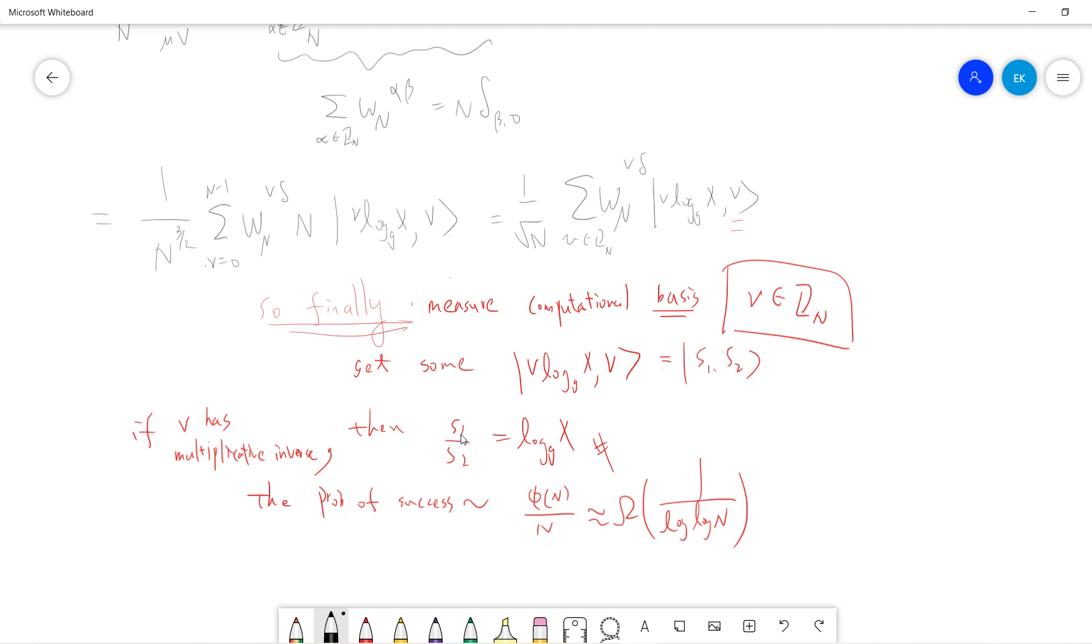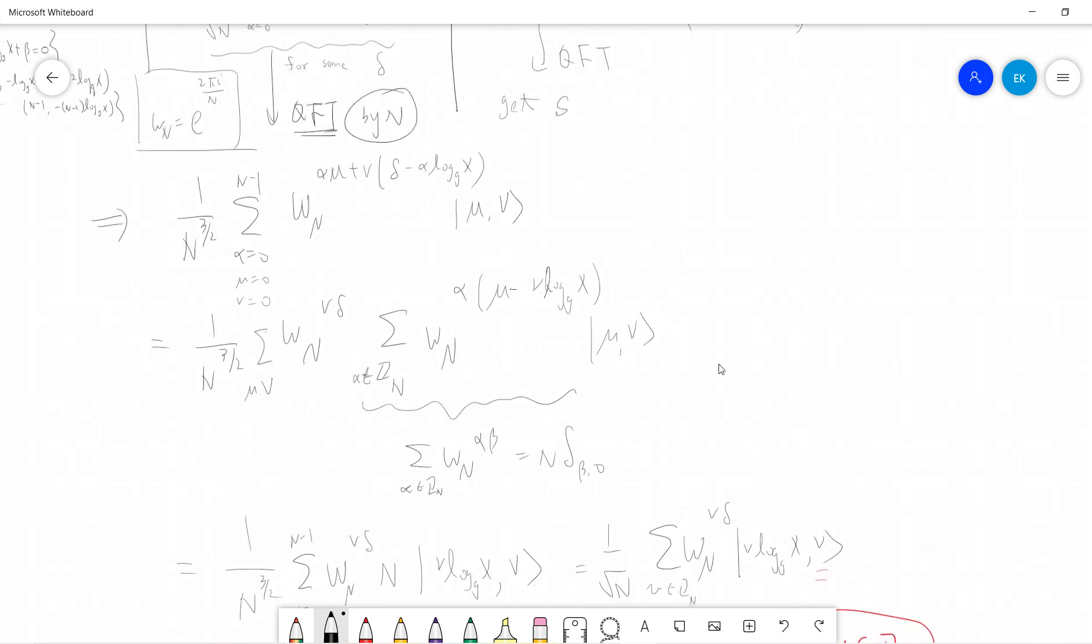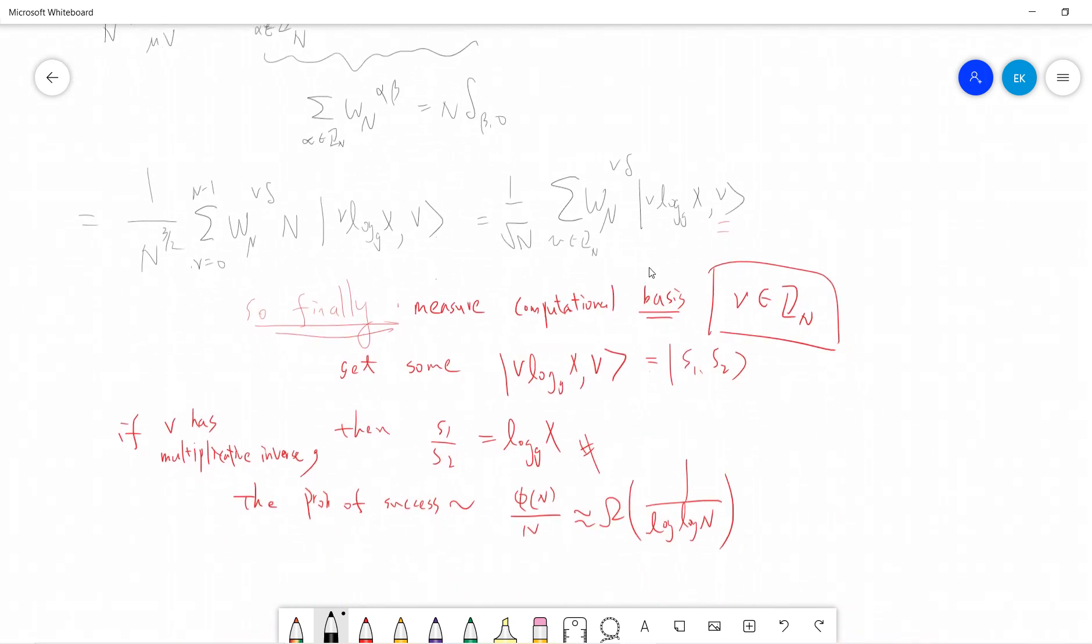We just use - I should say s_2 is non-zero. s_1 divided by s_2 will give you this. Then you do s_1 divided by s_2 in your secret group and you get the discrete log.